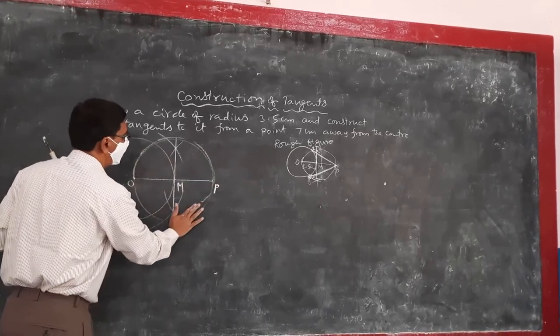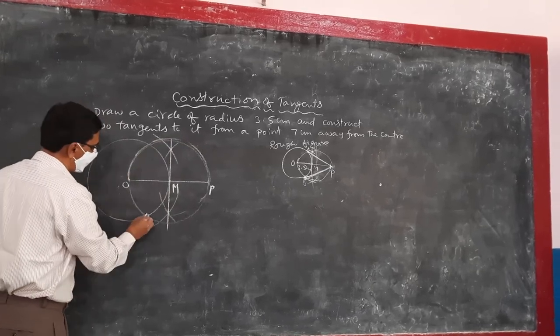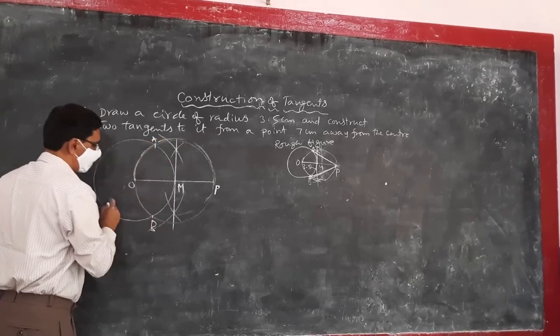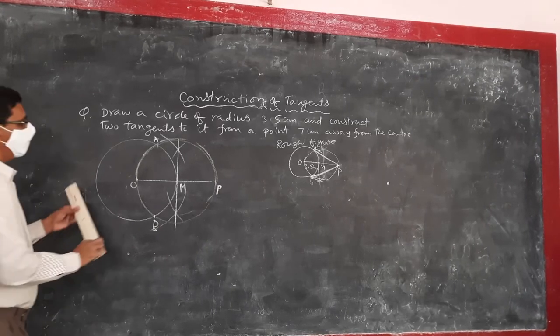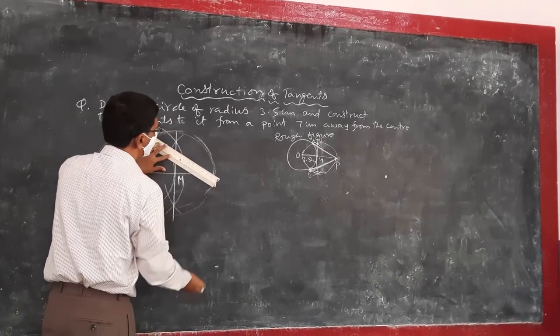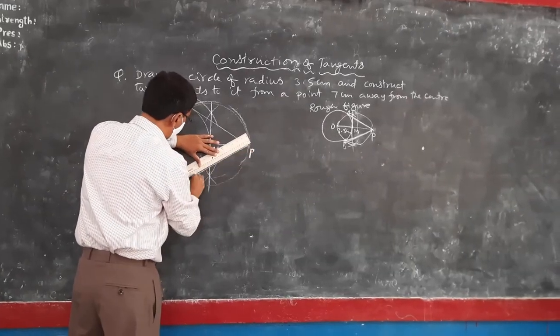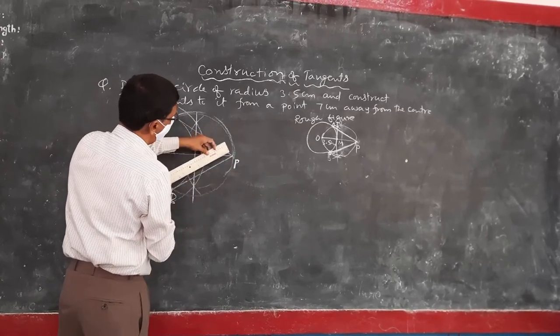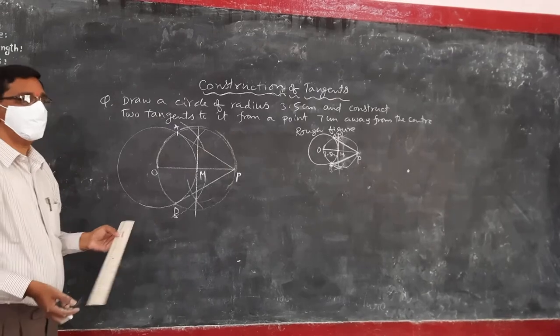The circuit will be intersecting the first circuit at two different points. The green circuit is intersecting at PA and PB. Same here also, right?